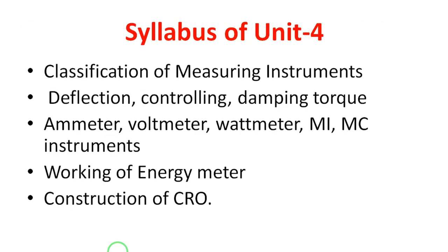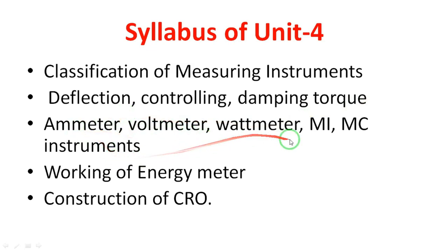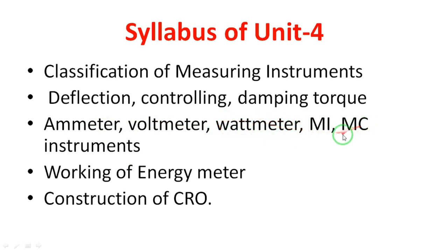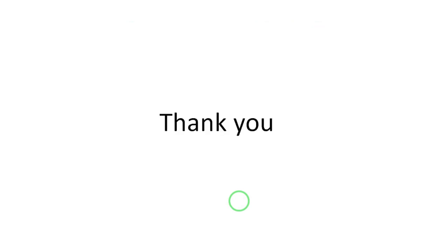Now coming to the syllabus of Unit 4: Measuring Instruments. First part — classification of measuring instruments. The main three torques are: Deflection Torque, Control Torque, and Damping Torque. The types of instruments covered are Ammeter, Voltmeter, and Wattmeter. We will do this in two videos. Types include Moving Coil and Moving Air instruments. We will also cover Wattmeter construction, working of an Energy Meter, and the construction of CRO in two parts. This is completely about Unit 4. If you have any comments, I will definitely reply. Thank you very much.